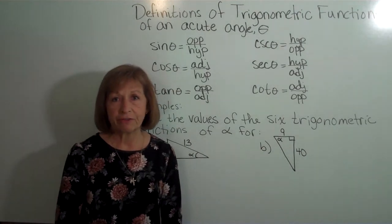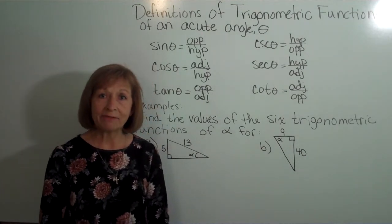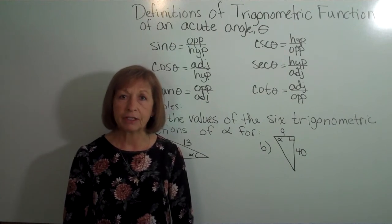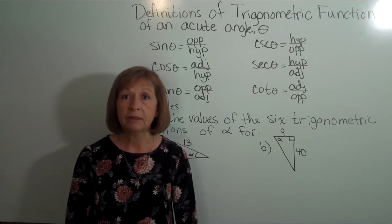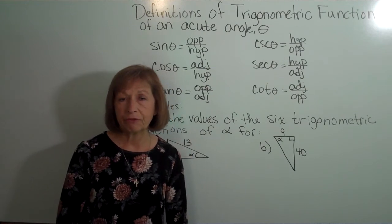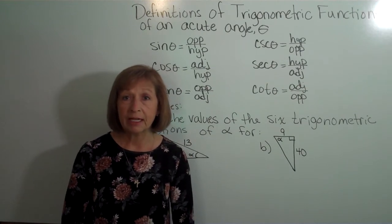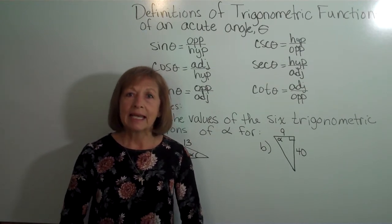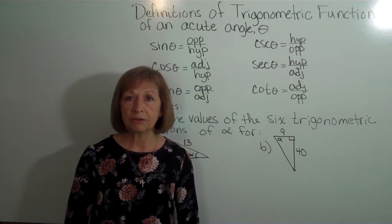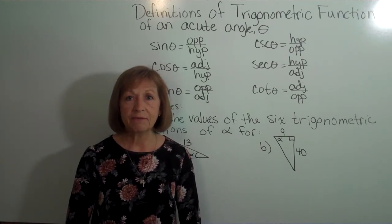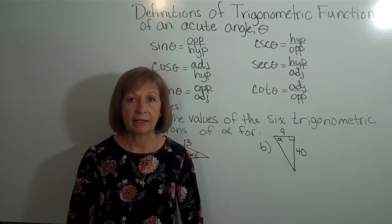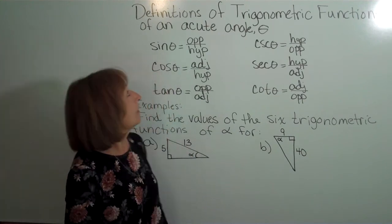When we look at trigonometric functions for the first time, it's defining them in the aspect of taking a trig function of an acute angle in a right triangle. As you go through the information for trigonometry, there'll be a lot of different extensions that we can do off of this, but here we're going to look at specifically the basic definitions of the trig functions of an acute angle.